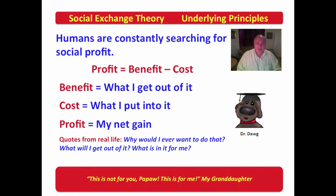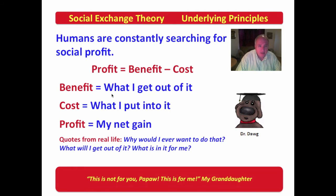Humans are constantly searching for social profit. Profit equals benefit minus cost. Benefit is what do I get out of it, cost is what I put into it, and profit is my net gain. So humans are constantly looking in social situations at how much social profit can be made, looking at what they get out of it and subtracting what they have to put into it to ensure the profit is positive.